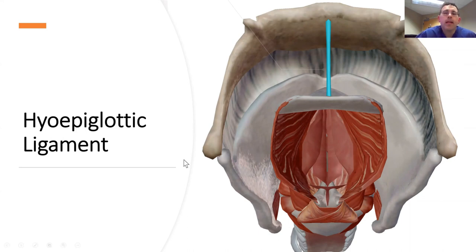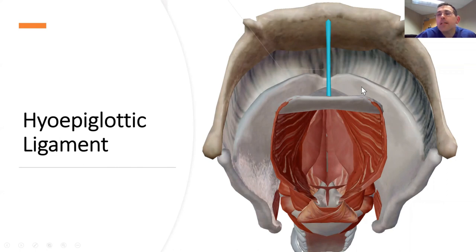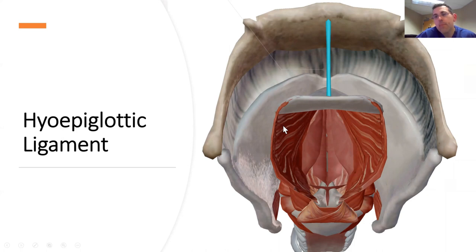Why spend time on the hyoepiglottic ligament? Because both curved blades — the GlideScope or any video laryngoscope, and the MAC blade — have their tips placed into the vallecula. When you put the tip into the vallecula, you depress the hyoepiglottic ligament down. When you push that structure down, you lift the epiglottis up and you're able to see the cords. That's why curved blades go into the vallecula: to depress this ligament, lift the epiglottis, and get your view.